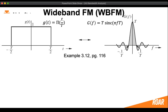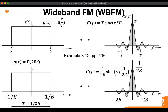We saw that a rectangular pulse in the time domain is going to translate into a sinc pulse in the frequency domain. So if we want to find the frequency domain information for our rectangular pulse, we know it had a width of 1 over 2b. If we take that rectangular pulse and take the Fourier transform of it, we get frequency domain information G(f) that has zero crossing points at minus 2b and 2b. So the total width of that main pulse is equal to four times the bandwidth of the original message.